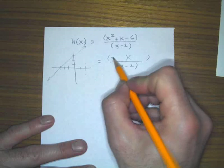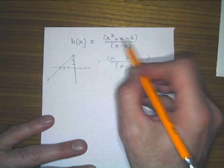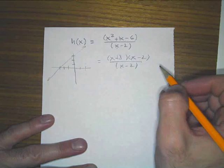Alright, let's figure out why. Let's factor the numerator. x and x, two numbers that multiply by six and add to positive one. So plus three, minus two. I think that's it.